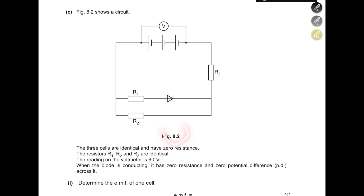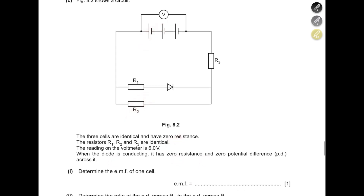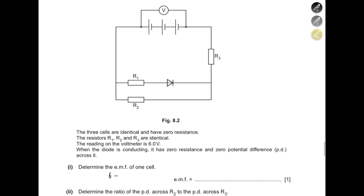Figure 8.2 shows a circuit with three identical cells connected in series, a voltmeter across the cells, two resistors, and a diode in series with R1. The cells have zero internal resistance and R1, R2, R3 are identical. When the diode is conducting, it has zero resistance and zero potential difference across it. Determine the EMF of one cell: 6 ÷ 3 = 2 volts each.